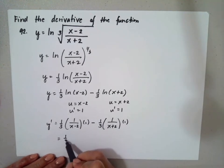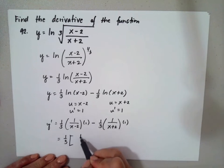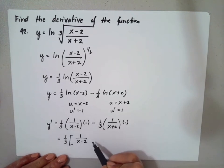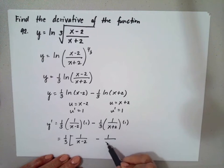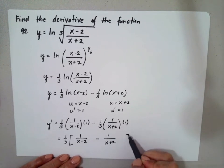The common factor is 1 third, so we have 1 over x minus 2 minus 1 over x plus 2.